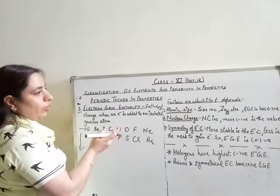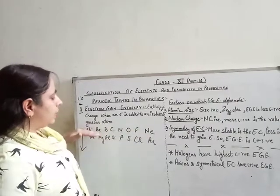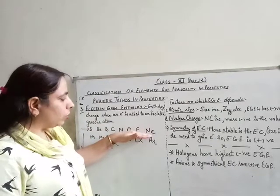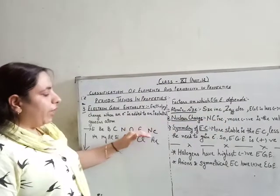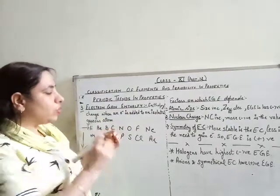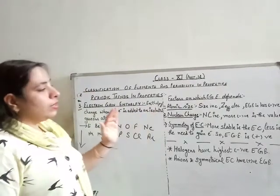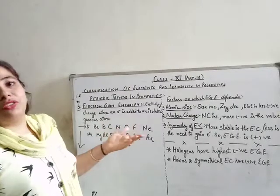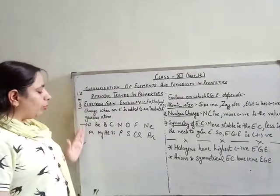The reason is that moving across a period, the atomic size decreases. If the size is less, the effective nuclear charge is more. If effective nuclear charge is more, the incoming electron strikes the atom with greater energy and more energy is released. Hence the electron gain enthalpy value becomes more negative.